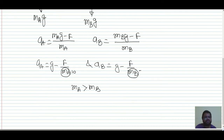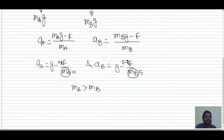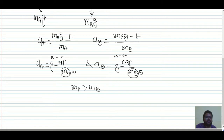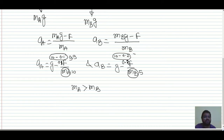For example, if m_A = 10 and m_B = 5 with F = 1, then a_A = g − 0.1 = 9.9 and a_B = g − 0.2 = 9.8. So acceleration of A is greater than acceleration of B. The larger mass has a larger net acceleration because the same air resistance subtracts a smaller fraction.